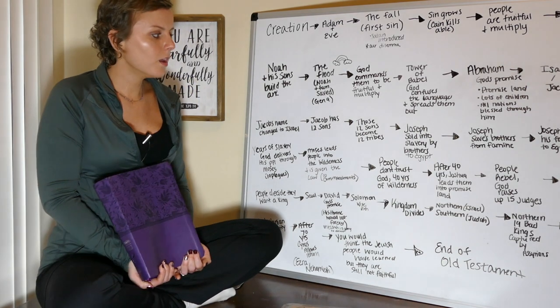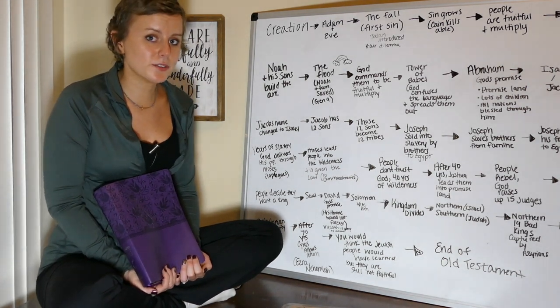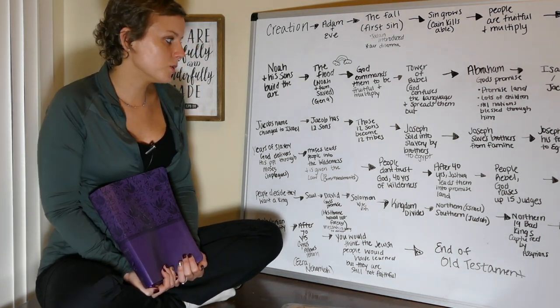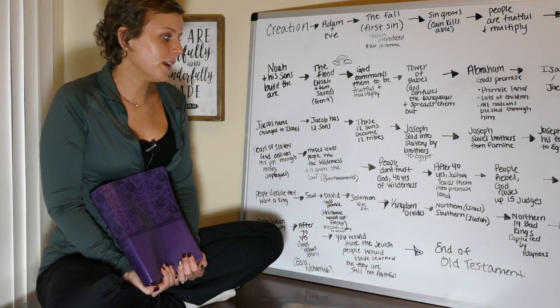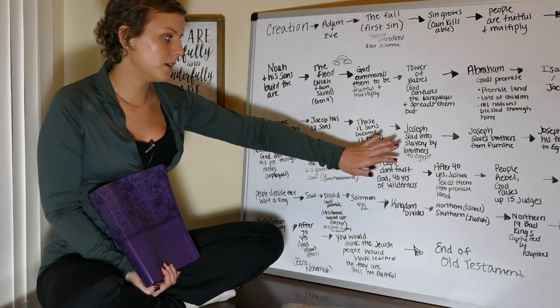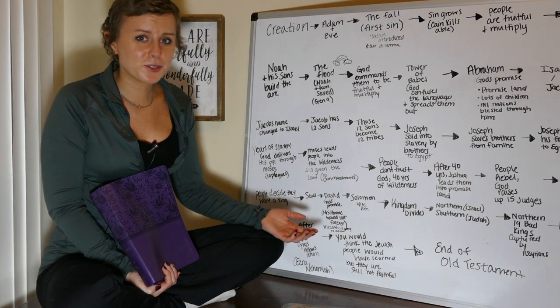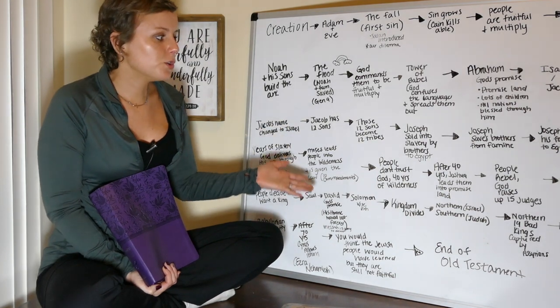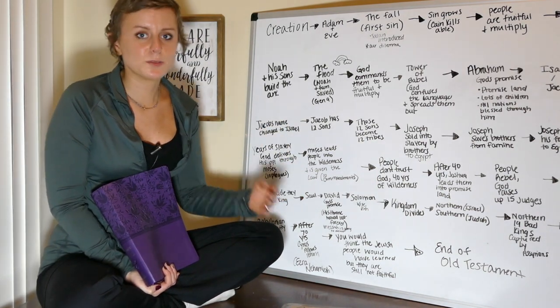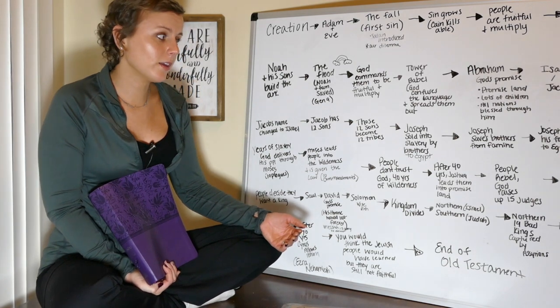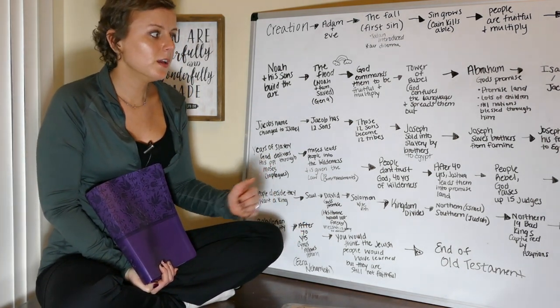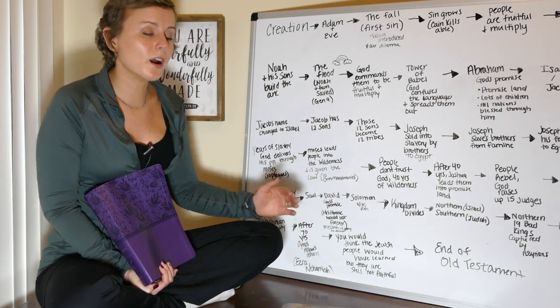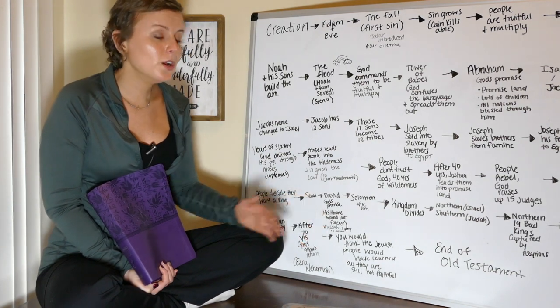So then we read that among the 12 sons, there is a boy named Joseph, and Joseph is hated by his brothers. They're jealous of him because his father gave him a coat of many colors, and it seems like he kind of played favorites with Joseph. So his brothers sell him into slavery, and that's how Joseph ends up in Egypt. Now, the story of Joseph is amazing. God's providence is really shown throughout his life. But, long story short, Joseph ends up rising to power in Egypt and saves his brother from a famine that's going on in the land. And Joseph brings his whole family to Egypt. As time goes by, the people in Egypt get kind of nervous because the Hebrew people, or God's people, start to outnumber them. So they make them slaves.